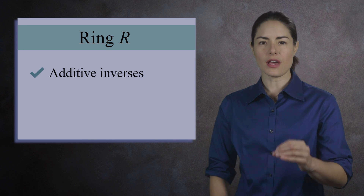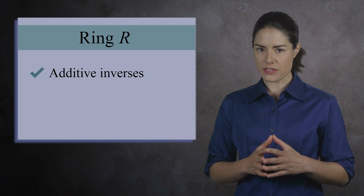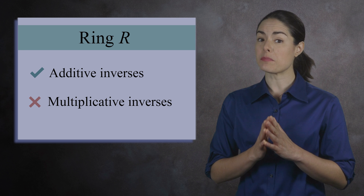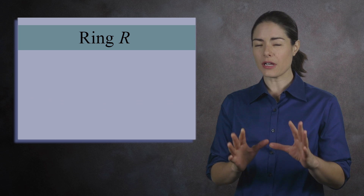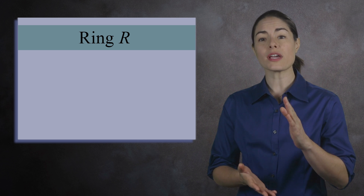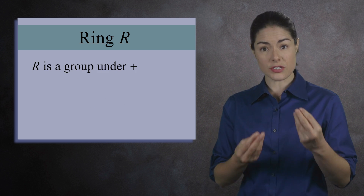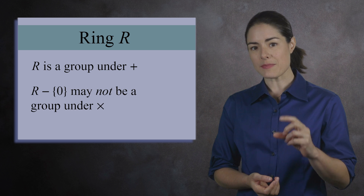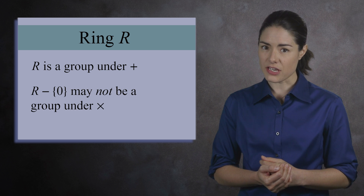In a ring R, every element has an additive inverse, but not every element will have a multiplicative inverse. Put another way, for a ring R, the elements form a group under addition, but the non-zero elements may not form a group under multiplication.